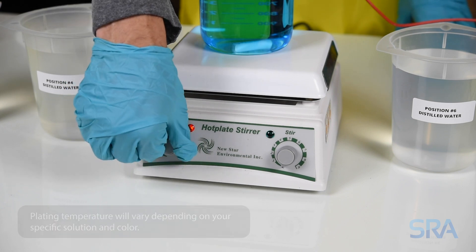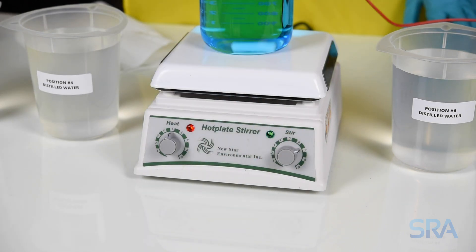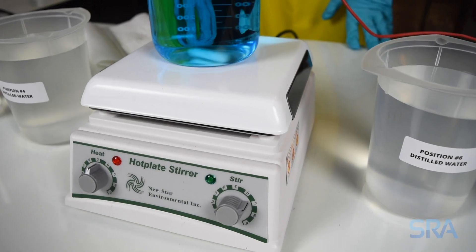The last step is to heat the plating beaker to a hundred degrees Fahrenheit and set the magnetic stirrer to a medium slow setting to mix for a minimum of 15 minutes before plating.